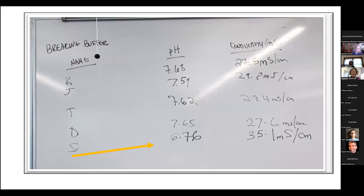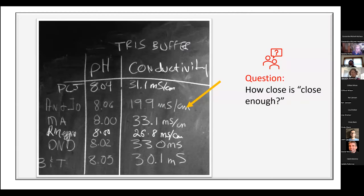This next slide is about a more complicated multi-component Tris-based buffer. Most students' pH and conductivity values agree pretty well. But Saeed's data — a pH of 6.76 and conductivity of 35.1 mS — is not in line with the rest. Saeed is a PhD scientist from Nigeria, a very diligent person who supervises technicians and students in his own lab and writes grants. He was upset that his solution wasn't right and started thinking about all the ways he could work on quality control with his own students and technicians.